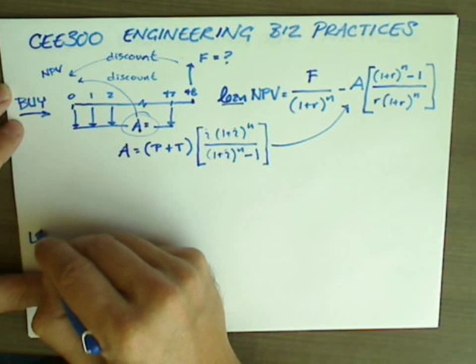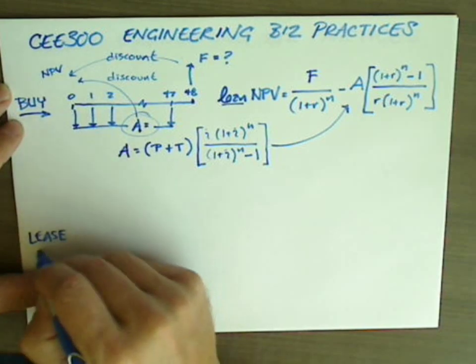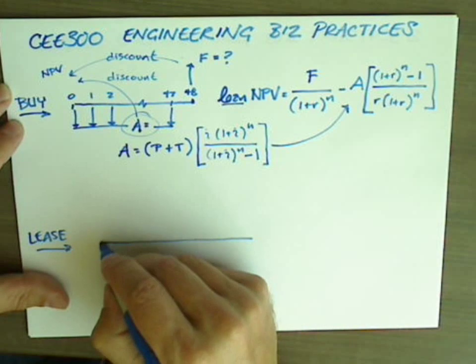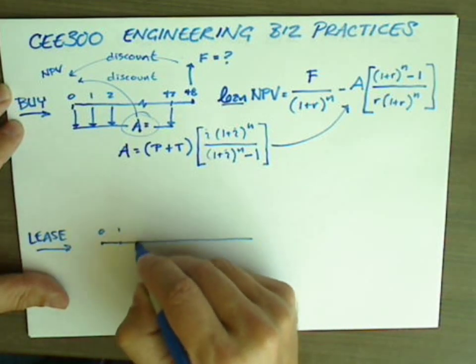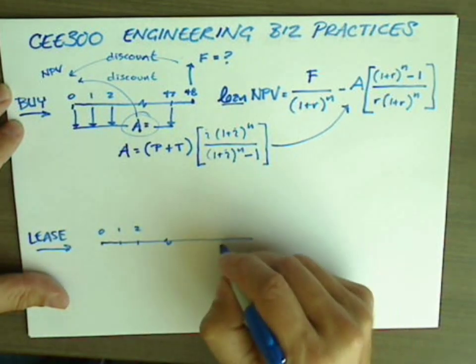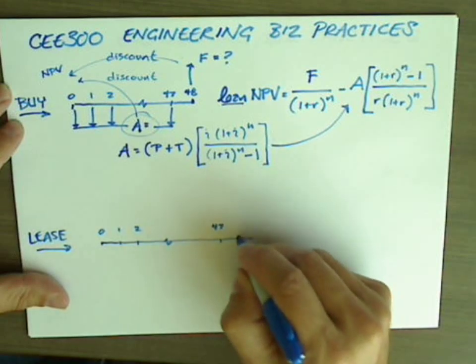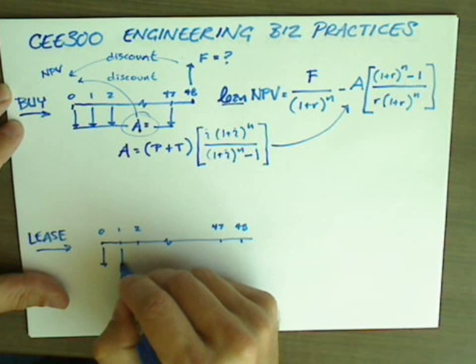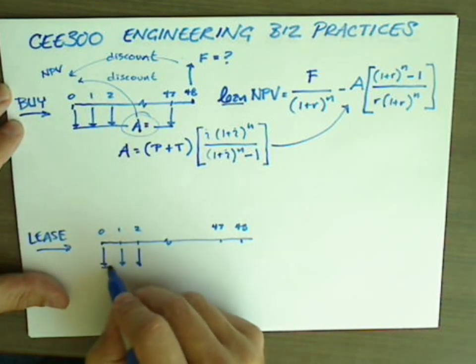Let's take a look at the lease option. The cash flow diagram for leasing is a little bit different than for buying. The principal advantage of the lease is that it reduces your monthly payments. So we're still going to go out for 48 years. We have some monthly payment that we'll call L.